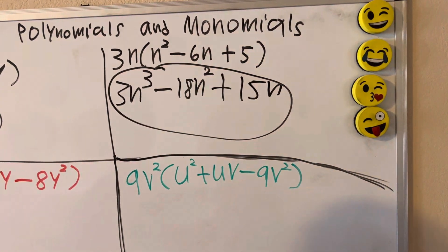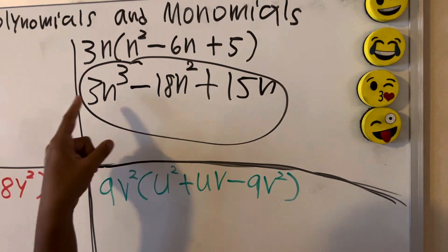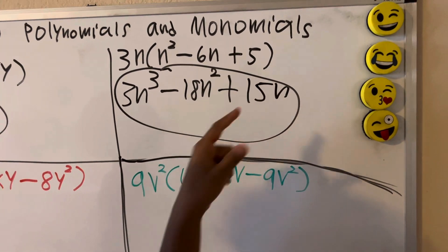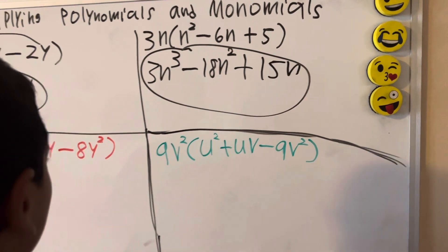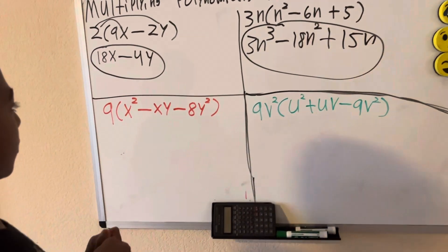So our solution in number 2 is 3n cubed minus 18n squared plus 15n. I'm going to switch to my red marker for this example. For the third one,